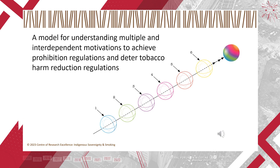In this video, I present a holistic model for understanding the multiple and interdependent motivations underpinning actions aimed at prohibiting access to and use of risk-reduced tobacco and nicotine products and actions to deter tobacco harm reduction approaches to reducing smoking.